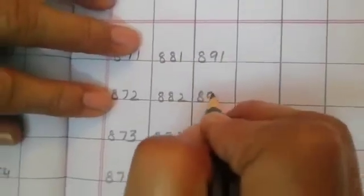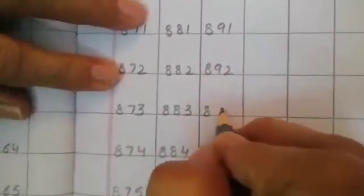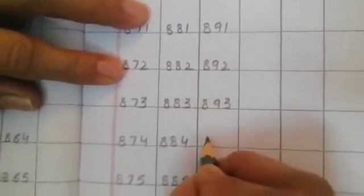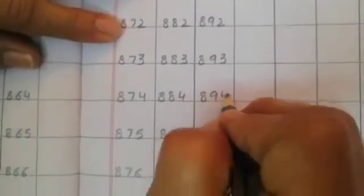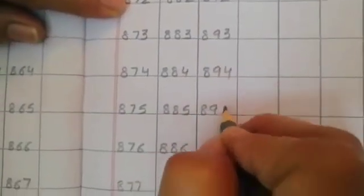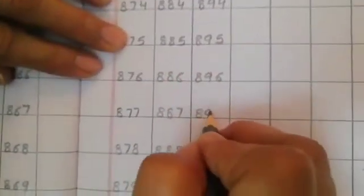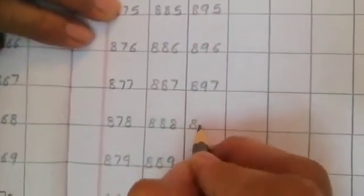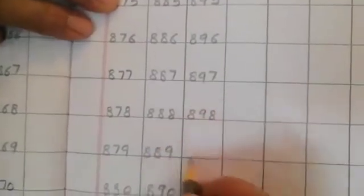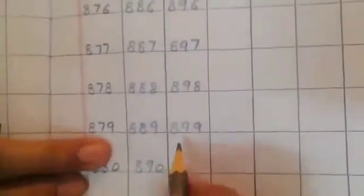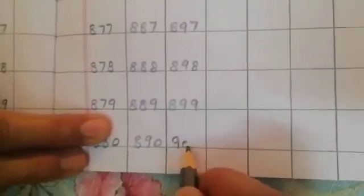891, 892, 893, 894, 895, 896, 897, 898, 899. Then what comes after 899? 900.